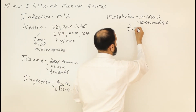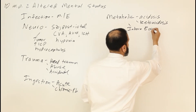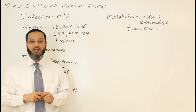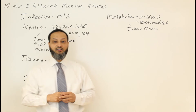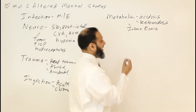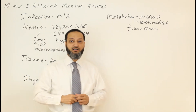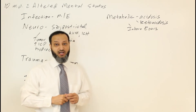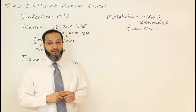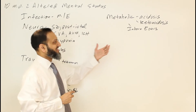Other metabolic considerations include inborn errors of metabolism. He is less than a year of age, so you still think about those. He could have different organic acidemias, amino acid defects, or a urea cycle defect that can cause increased ammonia levels and altered mental status. Many inborn errors of metabolism can also present with acidosis or other metabolic changes.